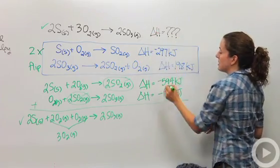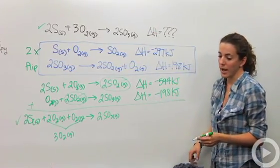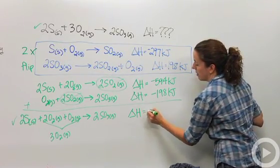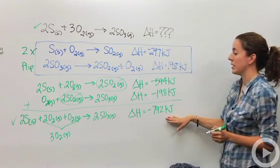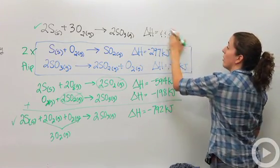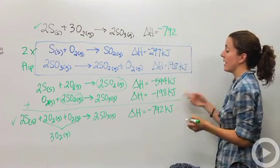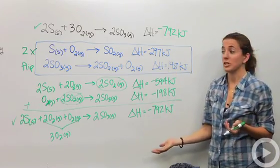And so I want to find my delta H. I'm just going to add these guys up. So negative 594 plus negative 198 is going to give me negative 792. So negative 792 kilojoules. So now I can know that this is negative 792 kilojoules because Hess's law says that I can do this.